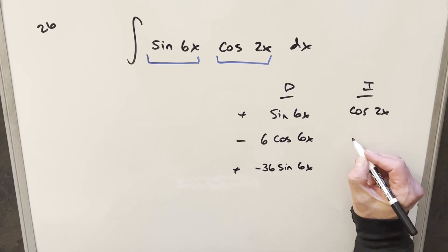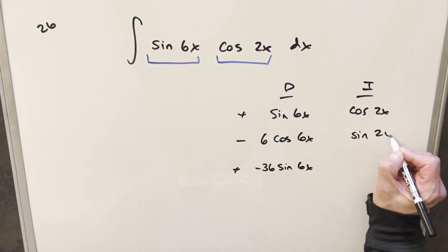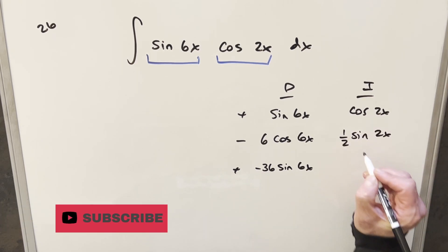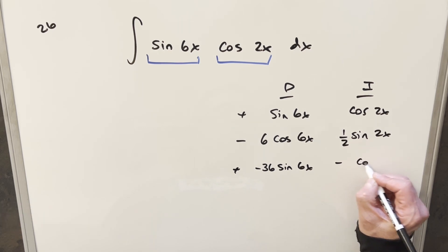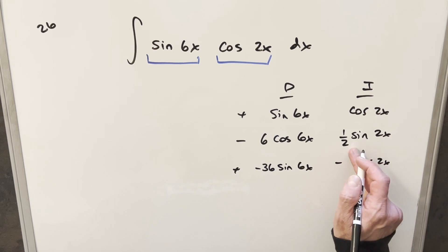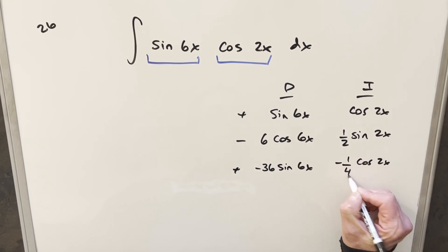Then coming over here, the integral of cosine 2x, this is going to be sine 2x, 1 half in front. And then doing it again, this integral is going to be minus cosine 2x. Pull another 2 out in the denominator, times a half gives me 1 fourth here.